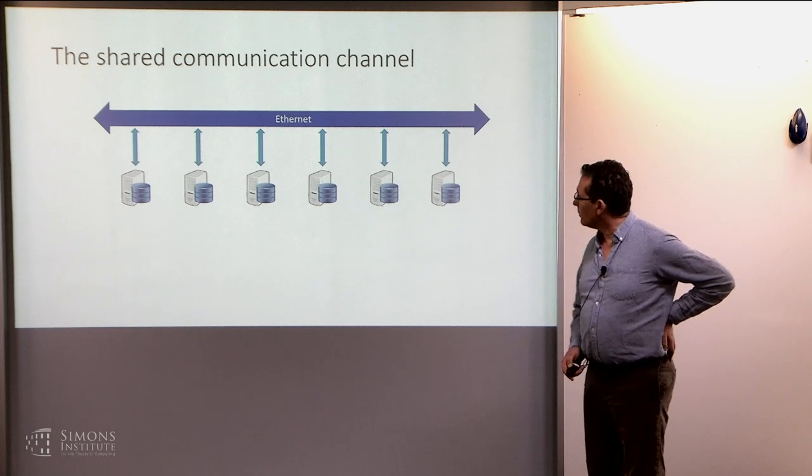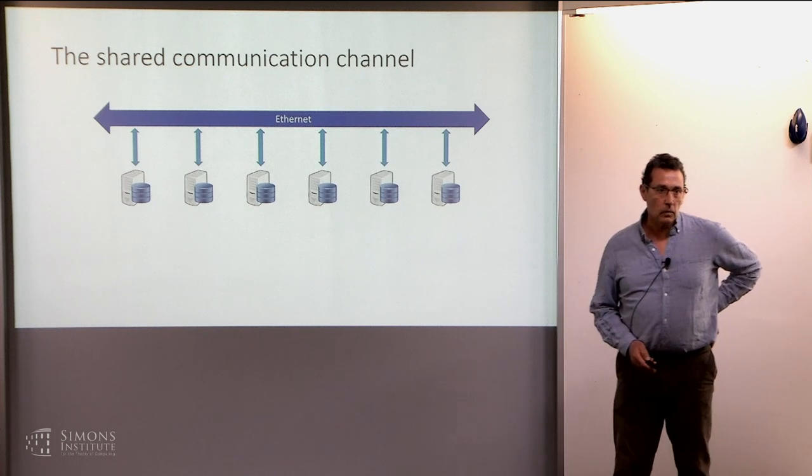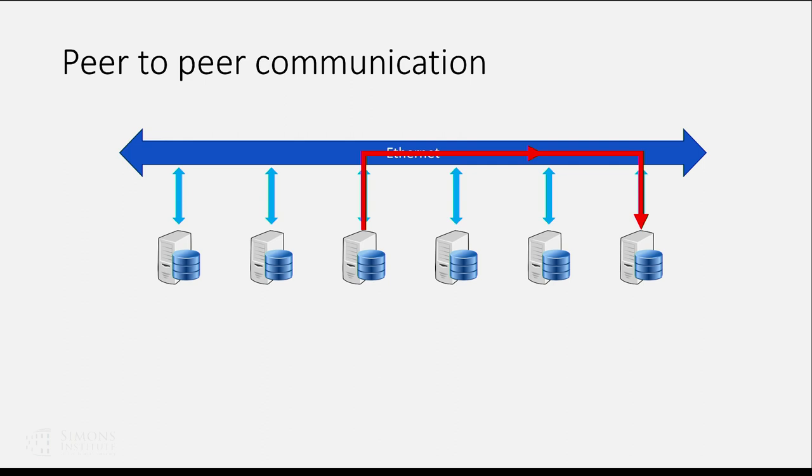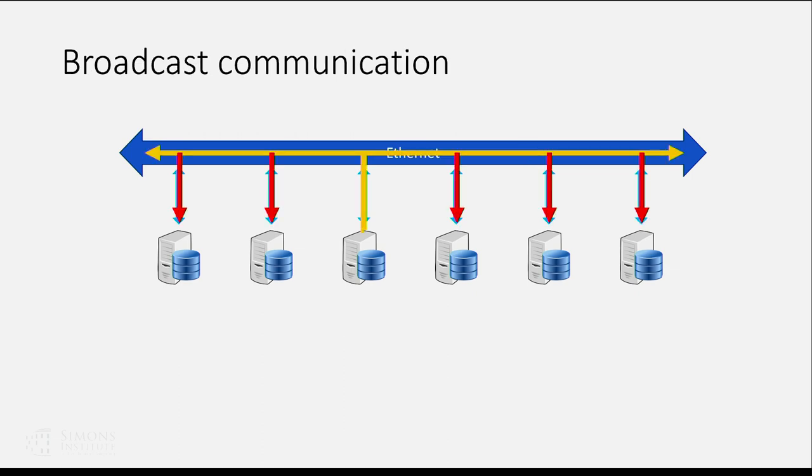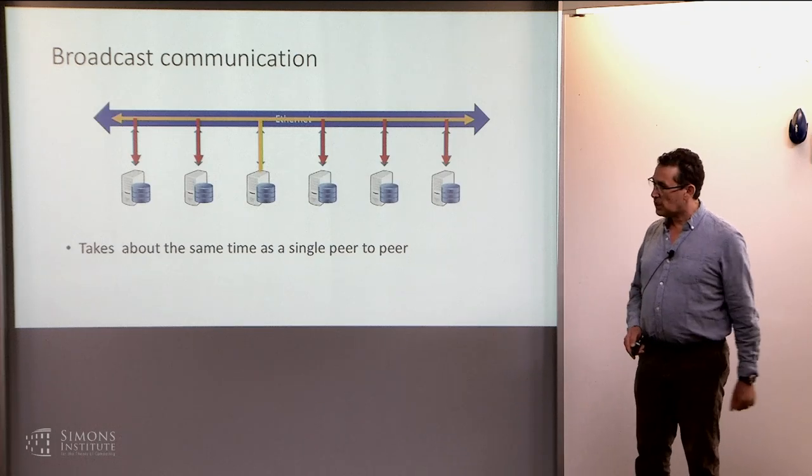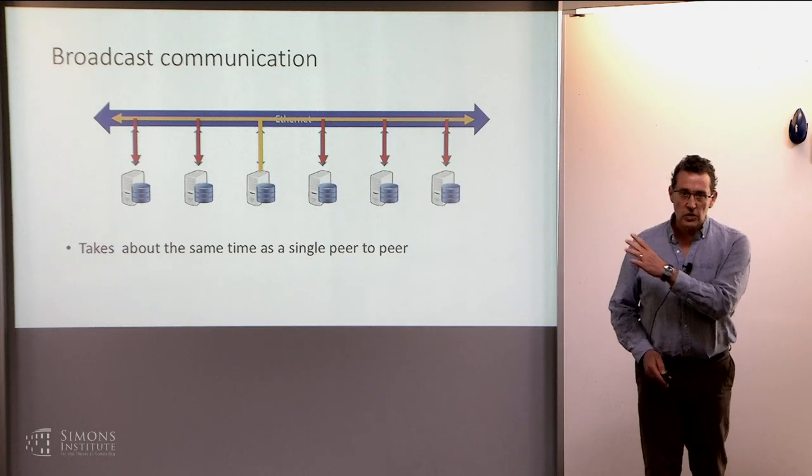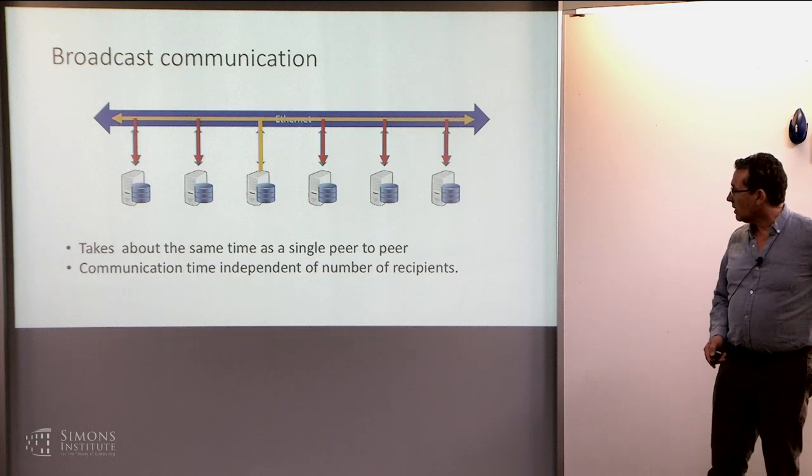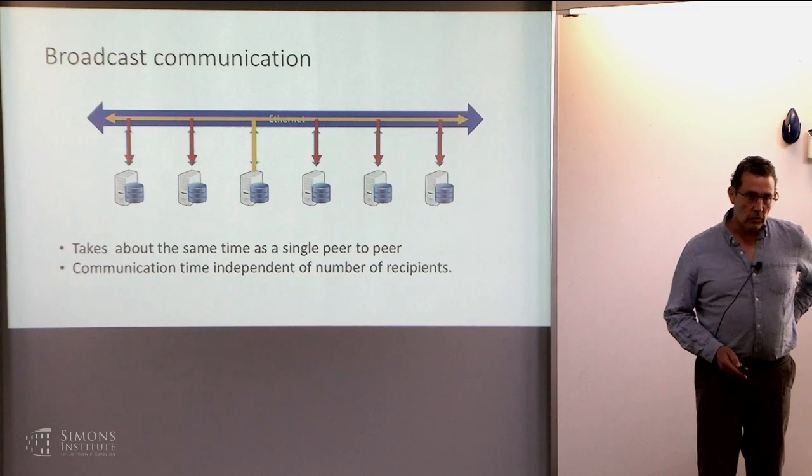Let's look at the kind of standard communication architecture that you have in machines. You have basically a bunch of machines and they're all connected through one shared channel, Ethernet usually. And there's two types of communication. You can do peer-to-peer, from one machine to another. And you can do broadcast. You can, from one machine, tell all the other machines some information. And the interesting thing is that broadcast takes about the same time as peer-to-peer because it's really how much time you need the channel. And the independent communication time when you do broadcast is independent on the number of receivers.